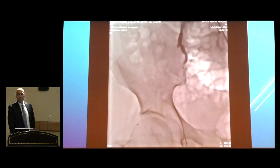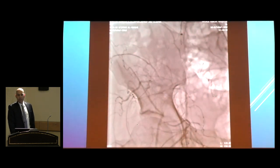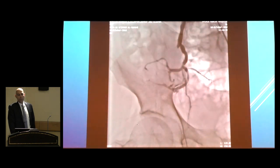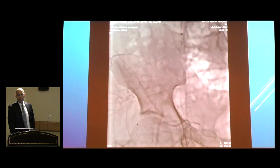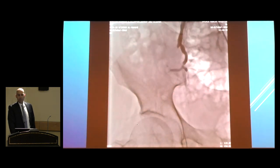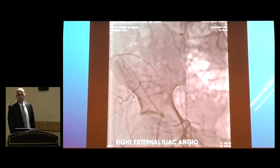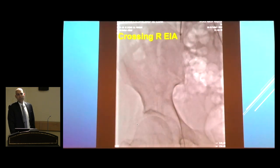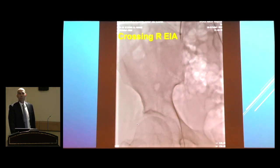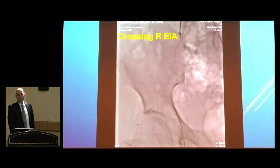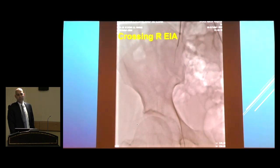After crossing the left common iliac, I put the sheath up and over. This picture shows the right external iliac, which is occluded, with the internal iliac feeding the profunda, feeding other branches, and filling up the right common femoral artery. In the next slide, I'll show how we crossed the right external iliac. We didn't use a lot of force — I just let the wire and catheter do the work without pushing or pulling, which is an important step.